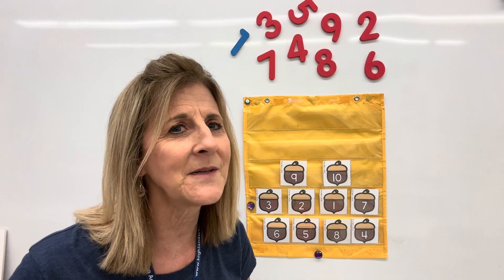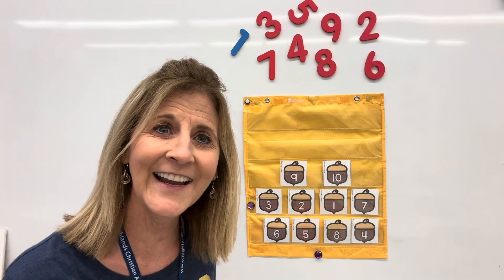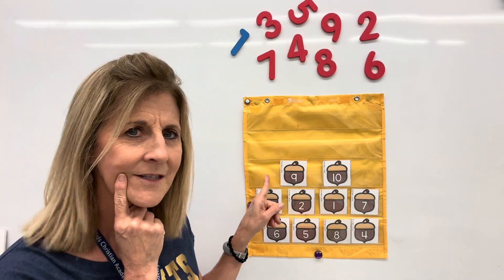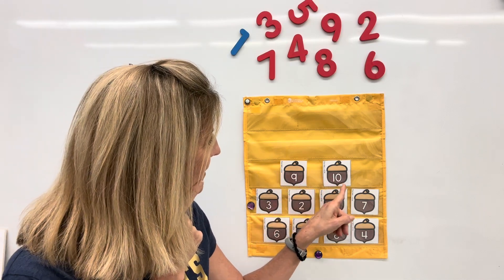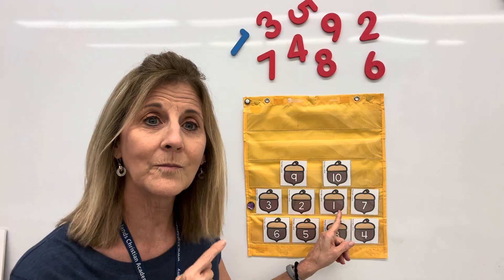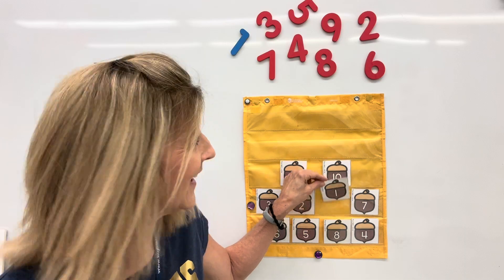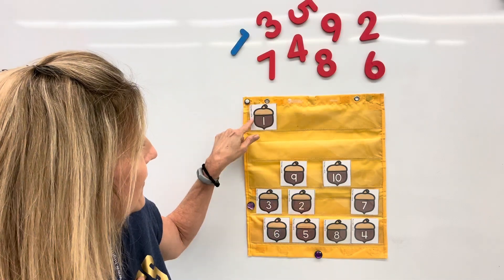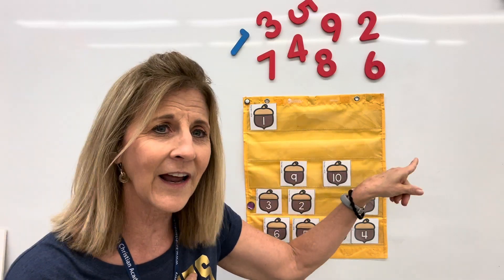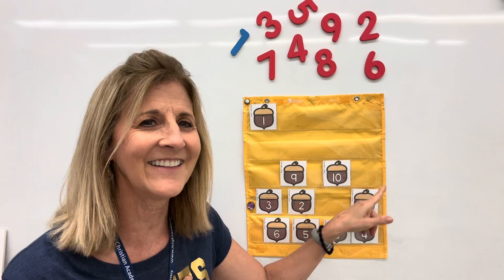Do you remember what number did we say first? That's right — number one. Do you see number one over here? Tell me when I get close to it. Okay, that's number one. You're right. I'm going to put number one first up here on the left, because we go from left to right when we're counting.